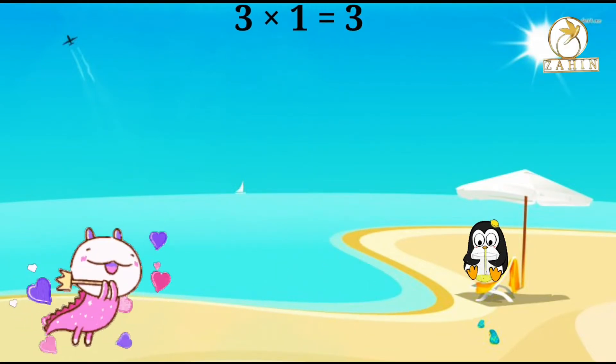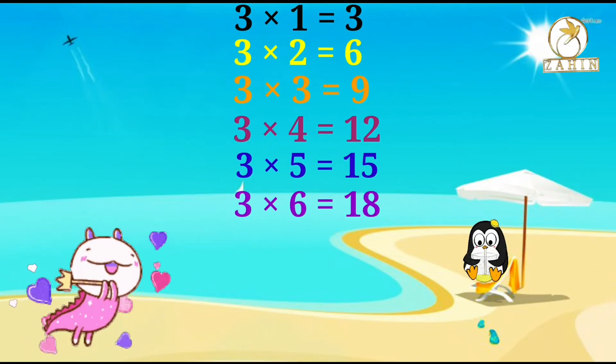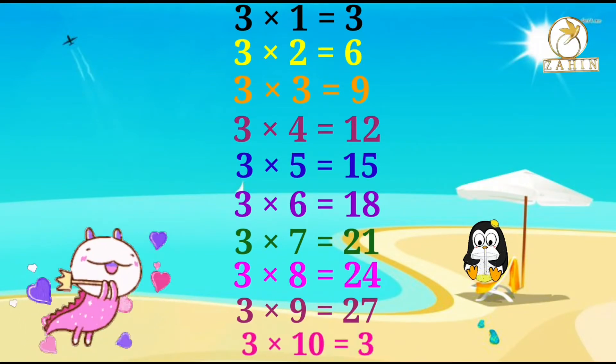3 times 1 equals 3, 3 times 2 equals 6, 3 times 3 equals 9, 3 times 4 equals 12, 3 times 5 equals 15, 3 times 6 equals 18, 3 times 7 equals 21, 3 times 8 equals 24, 3 times 9 equals 27, 3 times 10 equals 30.